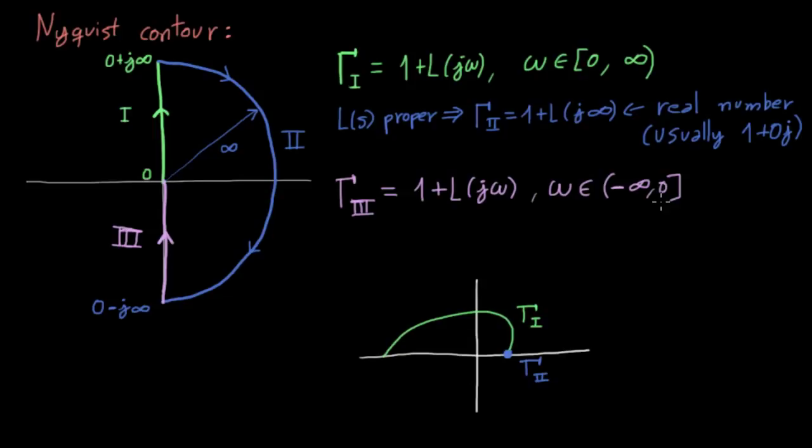Finally, the image of the third path is given by 1 plus L of j omega, with omega belonging to minus infinity 0. Obviously, these are the complex conjugates of the images of the first path, which means that the image of this path is symmetric to the image of the first path, with the real axis as the axis of symmetry.